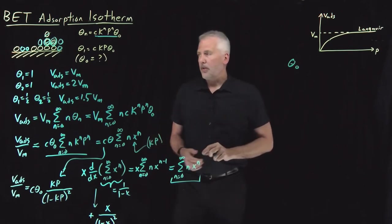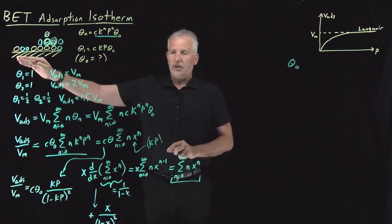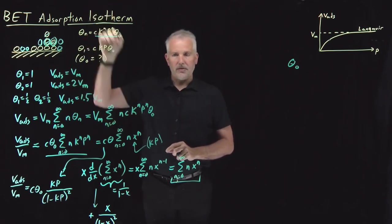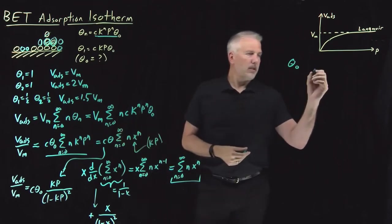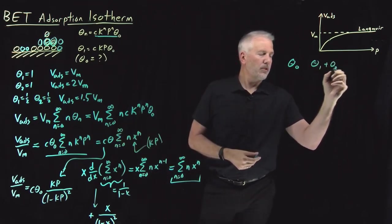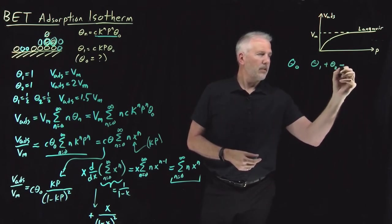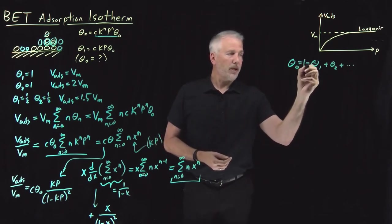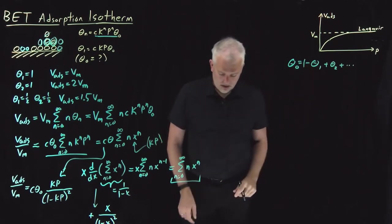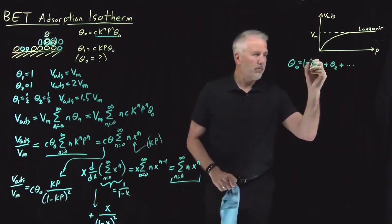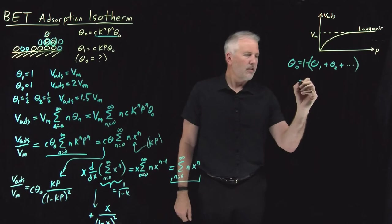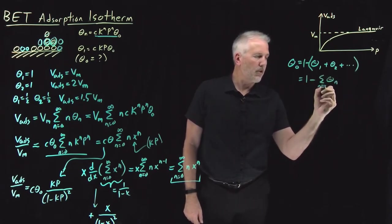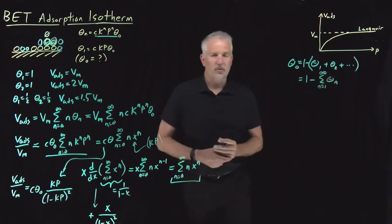The key is that every surface site is occupied by zero, one, two, three, or more molecules — all the way up to infinity. So the sum of theta naught plus theta 1 plus theta 2 and so on must add up to 1. Therefore, theta naught equals 1 minus the sum of all theta n from n equals 1 to infinity.